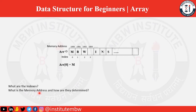Now what are the memory addresses and how are they determined? The memory addresses start according to the location in memory allocated by the system. The increment in the memory address for consecutive data items is equal to the byte size of the data type. Like in this case we are storing char, so the memory address would be increased by 1. In cases of integer it is increased by 4.